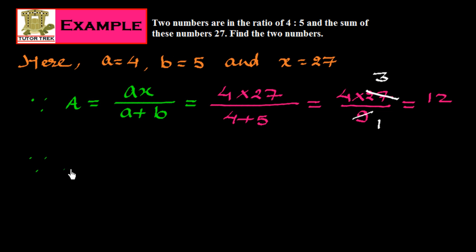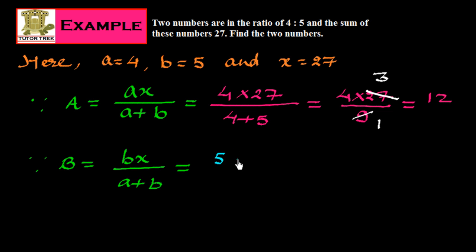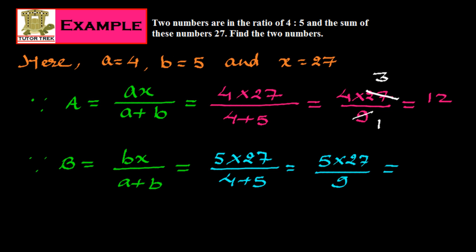Now we find the second number: b = bx/(a+b) = 5×27/(4+5) = 5×27/9 = 5×3 = 15. So the numbers are 12 and 15. Their sum is 27, and the ratio 12/15 simplifies to 4:5 when divided by 3. This way we can solve these kinds of problems.